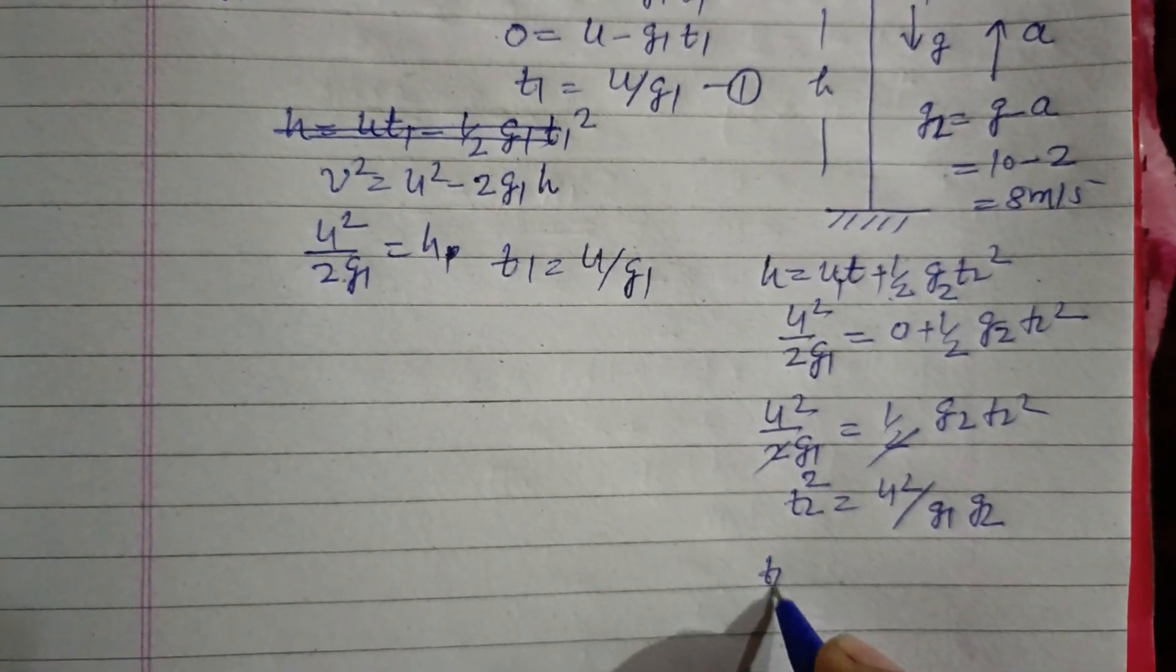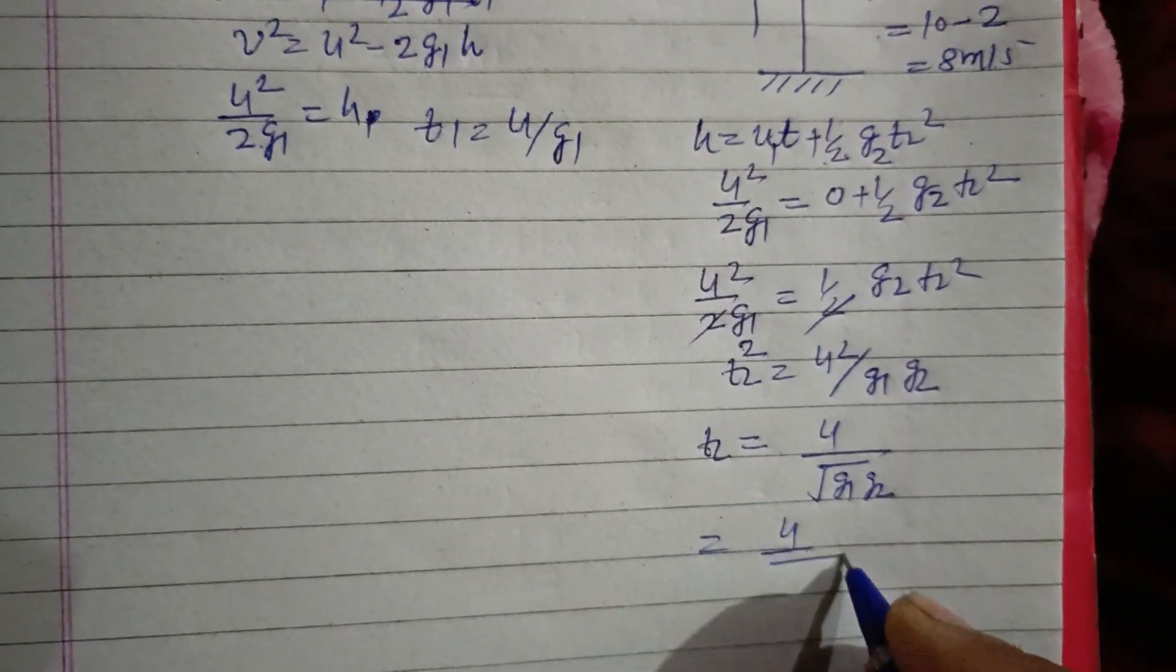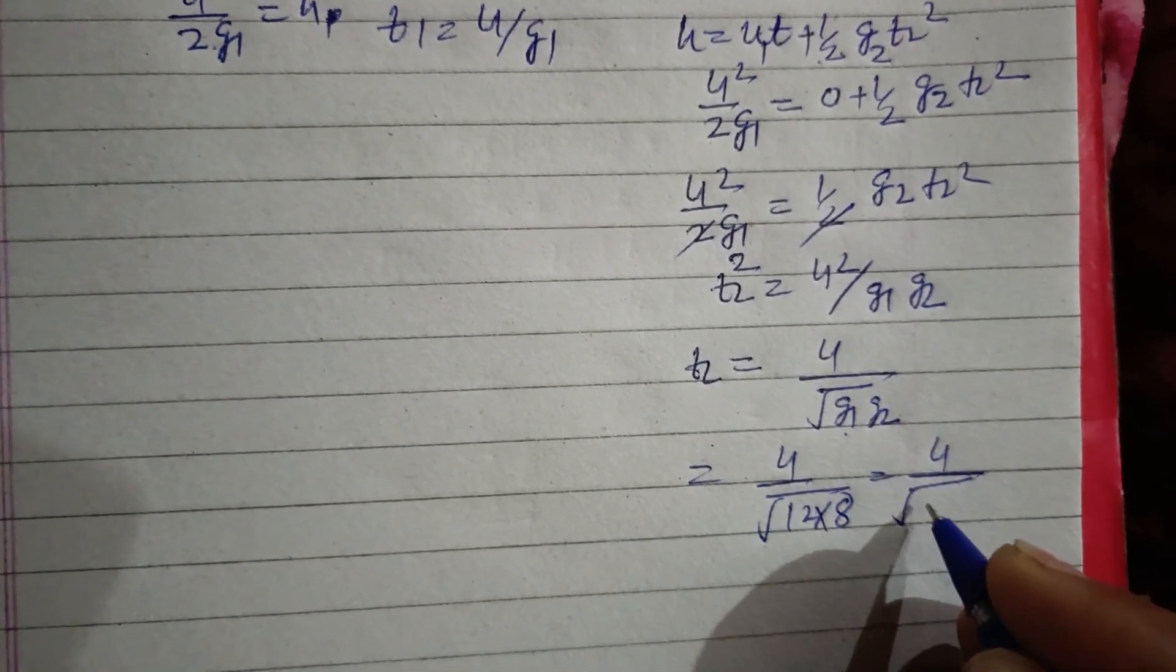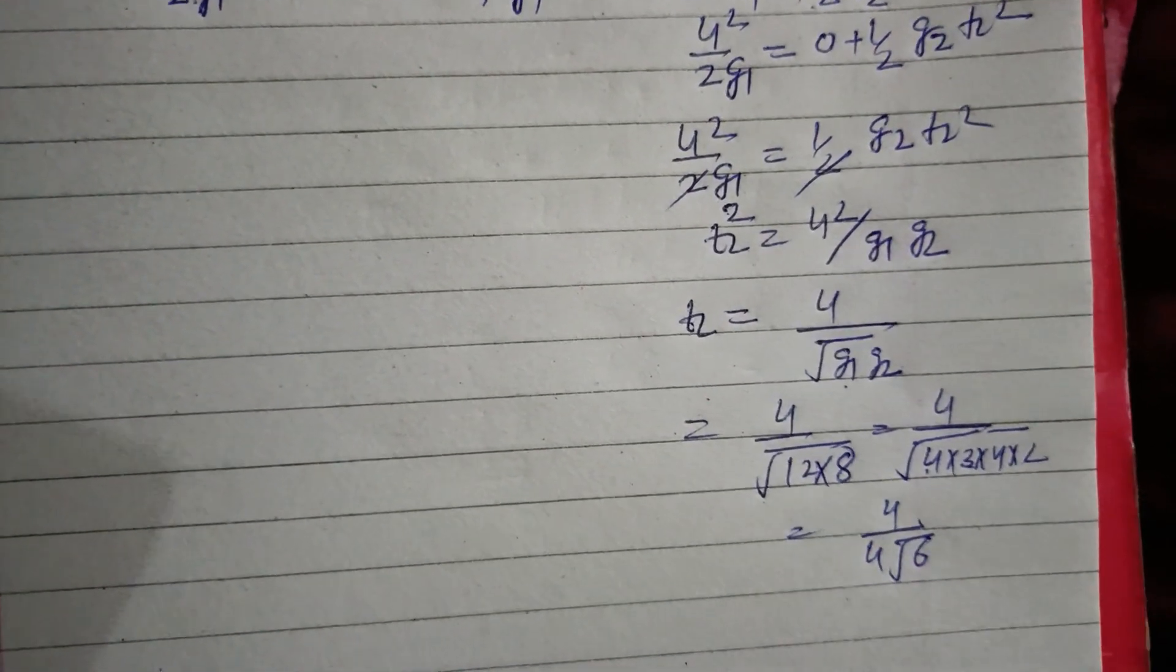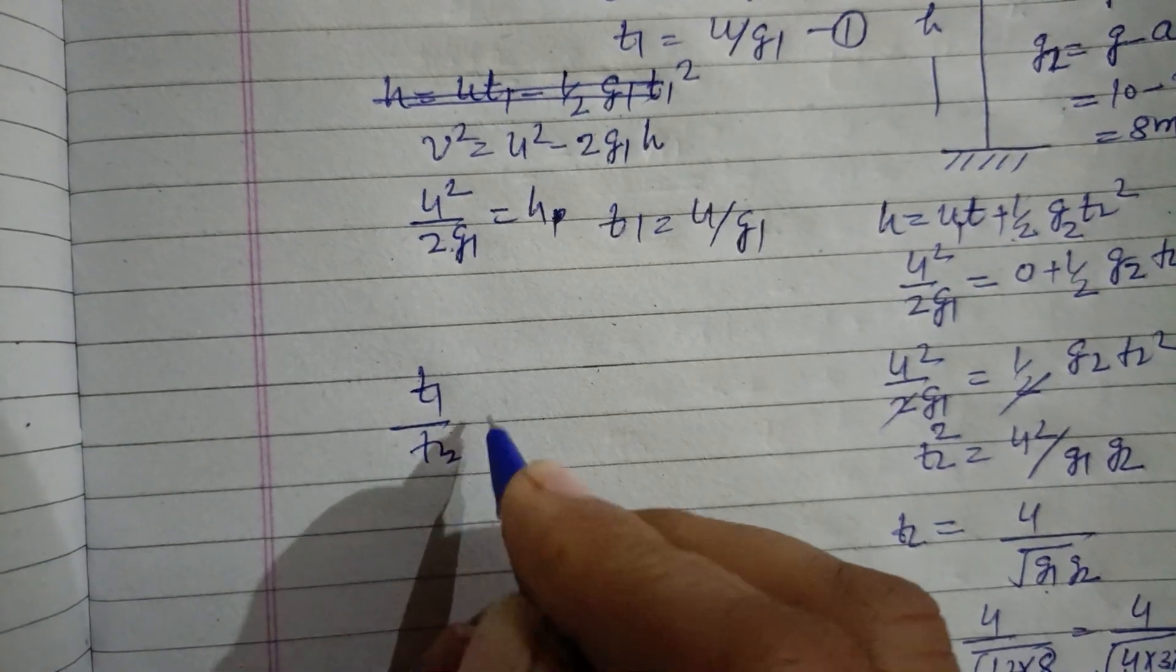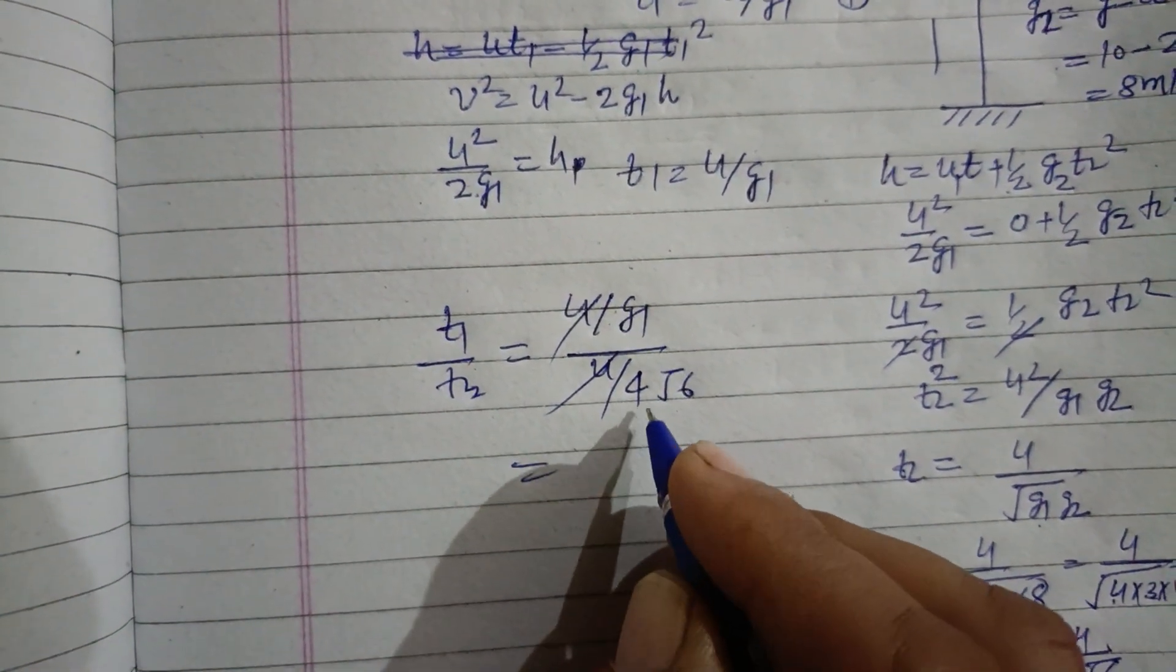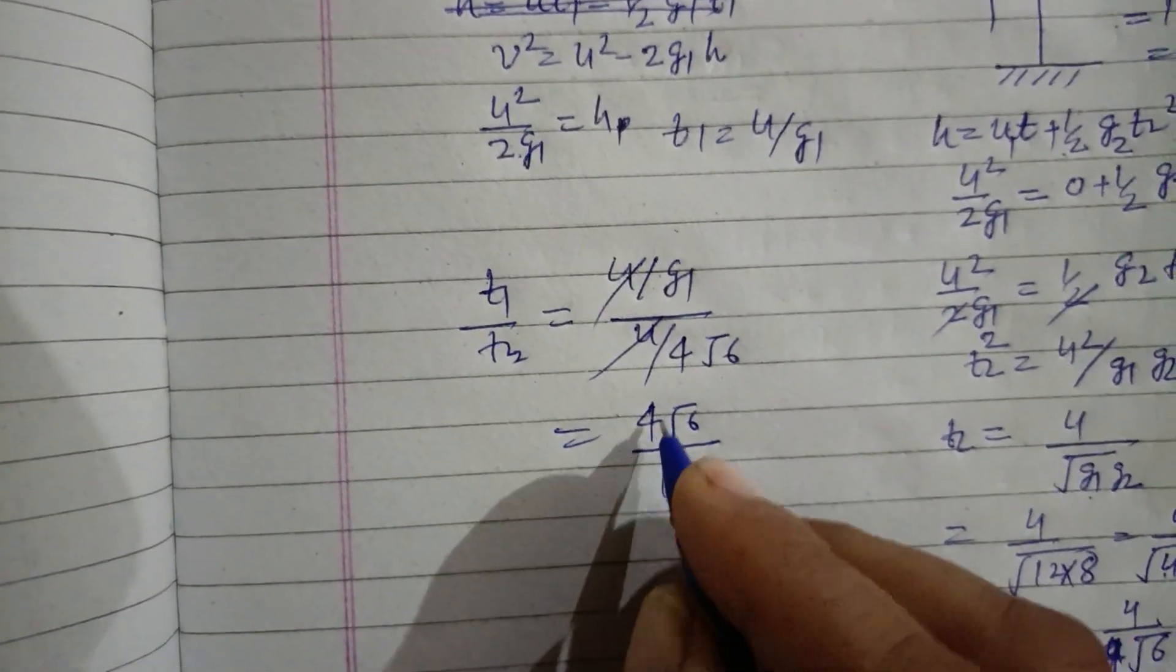So finally we can get t2 equals u over root of g1 g2, and we put value of g1 and g2, which is 12 and 8. So this is u upon 4 root 6. Therefore t1 upon t2 equals u upon g1 over u upon 4 root 6. u cancels. Now we put the value of g1, so 4 root 6 over g1. g1 is 12, so this is 4 root 6 upon 12.